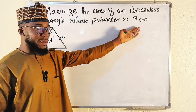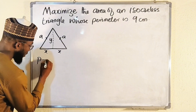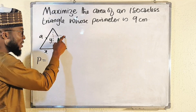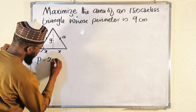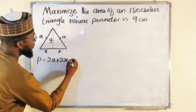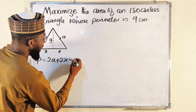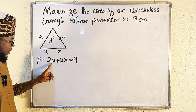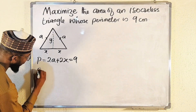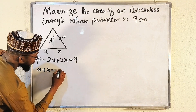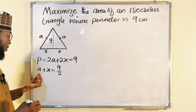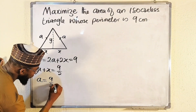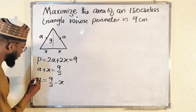Let me start with the perimeter since it is already given. Perimeter P equals the sum of all side lengths: a + a + x + x = 2a + 2x, which equals 9 cm. Dividing every term by 2 gives a + x = 9/2. Making a the subject: a = 9/2 − x. This is a very important equation — let me box it.